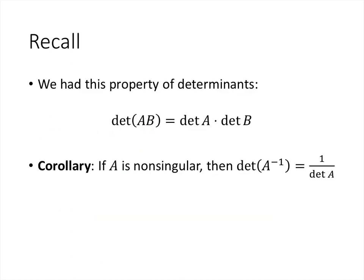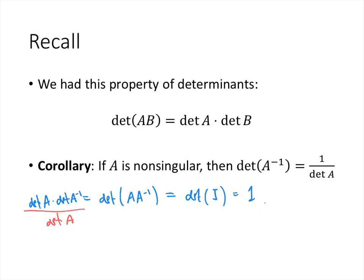Now let's discuss some general facts about eigenvalues. We know that the determinant of a product of two matrices equals the product of their determinants. A consequence is that for an invertible matrix, the determinant of its inverse is the reciprocal of its determinant. To see why: det(A · A⁻¹) equals det(A) times det(A⁻¹), but also equals det(I) which is 1. Dividing both sides by det(A) gives det(A⁻¹) = 1/det(A).